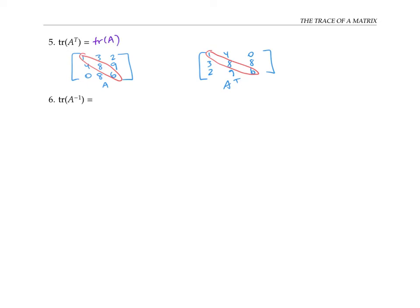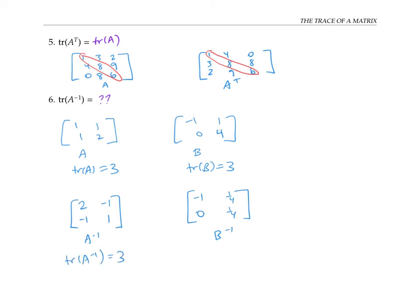What can we say about the trace of A inverse in terms of the trace of A? It turns out, pretty much nothing. For example, here are two matrices, A and B, both with a trace of three. But their inverses have different traces: the trace of A inverse is three, while the trace of B inverse is negative three-fourths. So there's no simple relationship between the trace of an inverse matrix and the trace of the original. For two by two matrices, there is a relationship involving the trace and determinant: the trace of the inverse equals the trace of the original divided by its determinant. But things get more complicated for higher-dimensional matrices, and there's no simple general relationship between trace and inverse.